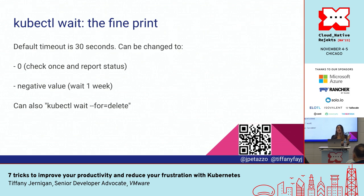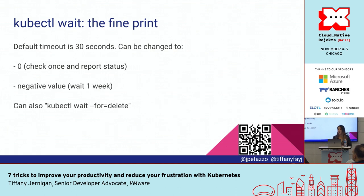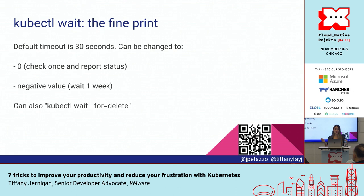The default timeout for kubectl wait is 30 seconds. Some things might take longer than that, so you might want to set it to something like 10 minutes. You could also set it to zero, which just checks once and reports whatever the status is. You can do a negative value, which is the longest time — a week. I don't know what you're doing if you're waiting a week, but if you are, let me know. You can also do kubectl wait --for delete.